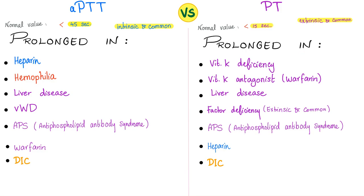PT measures the extrinsic and common pathway — prolonged in vitamin K deficiency, vitamin K antagonists, liver disease, and factor deficiency. PTT is prolonged in APS (antiphospholipid antibody syndrome), heparin, DIC, and hemophilia (factors 8, 9, and 11 are all intrinsic). Liver disease and Von Willebrand disease also prolong PTT. Most students think heparin only prolongs PTT and warfarin only prolongs PT — that's wrong. Both heparin and warfarin prolong both PT and PTT. It's just easier to monitor heparin with PTT and warfarin with PT.